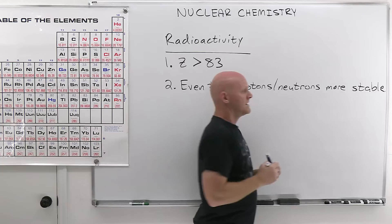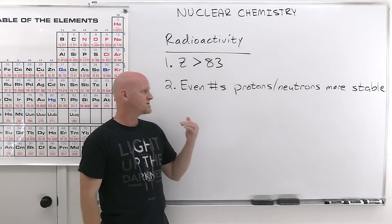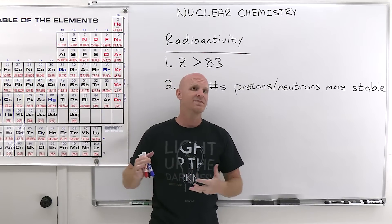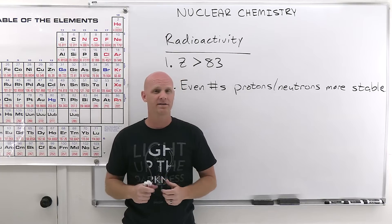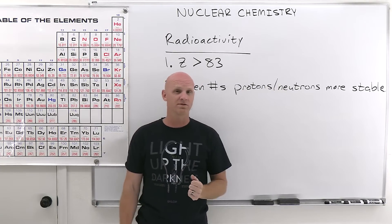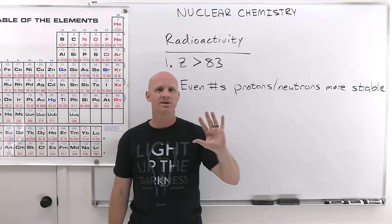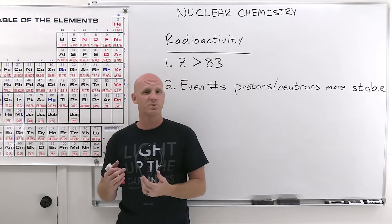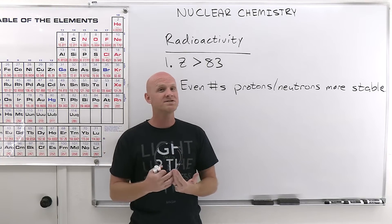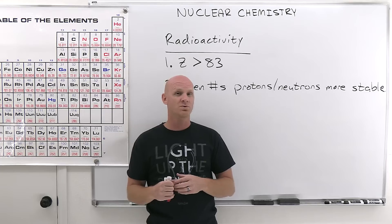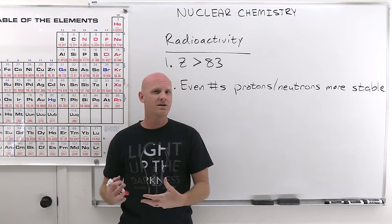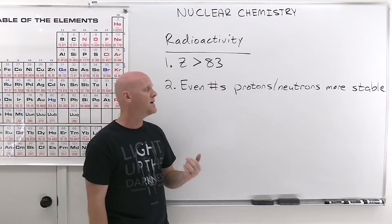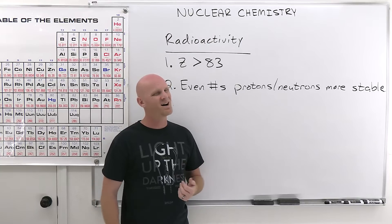The next trend: even numbers of protons and neutrons are more stable. If you have an even number of both protons and neutrons, you're much more likely to be stable. An odd number of either leads toward instability and more likelihood of being radioactive. If you have an odd number of both protons and neutrons, there's a really high likelihood of being radioactive. We only know of five naturally occurring isotopes with an odd number of both that are still stable — nitrogen-14, with seven protons and seven neutrons, is one of them.